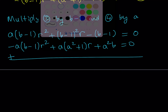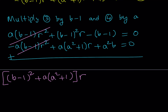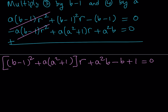After adding, the R² terms cancel and we get a linear equation in R. Grouping the coefficients: [(B−1)² + A(A²+1)]R + (A²B − B + 1) = 0. This is equation number 5, and now my goal is to solve for R.